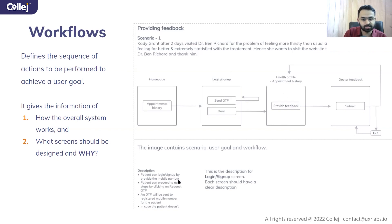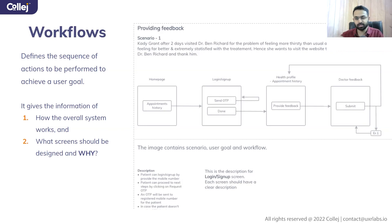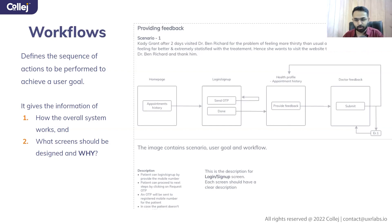Here you are defining: patient can log in or sign up by providing the mobile number. Patient can proceed to the next step by clicking on 'Request OTP' — and whatever a user can do, you are describing that. This is just an idea of how the overall system works: what are the different touch points and from which action to which screen or stage the flow is moving.